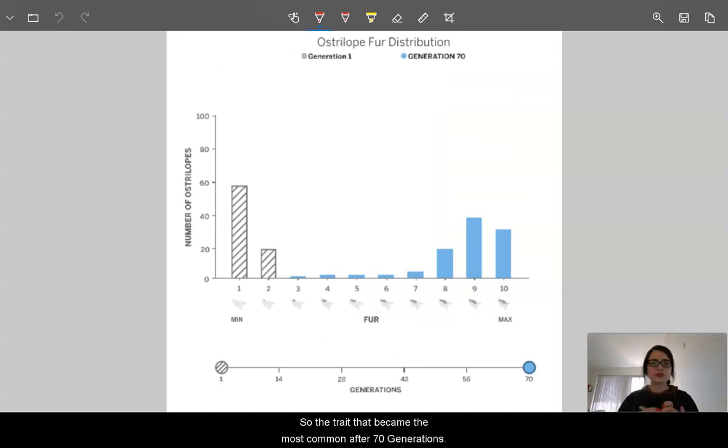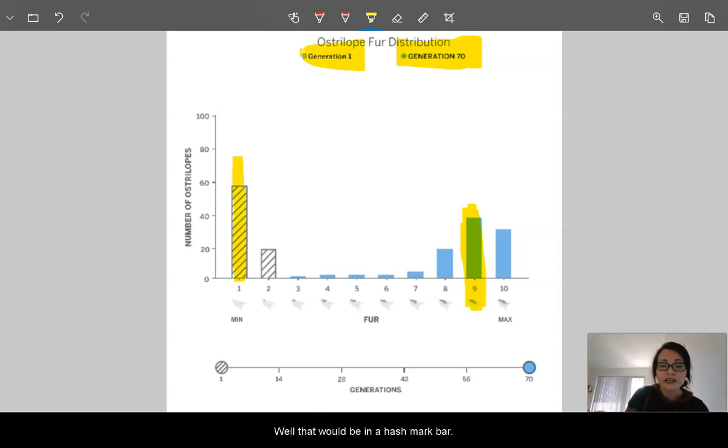So the trait that became the most common after 70 generations is going to be this trait number 9 right here. And if we remember how these histograms are written for us, anything that's present in the final generation we recorded, like generation 70, that would be in a blue bar. And anything that existed in the starting population, well, that would be in a hash mark bar. Trait level 9 was not present in the original population.